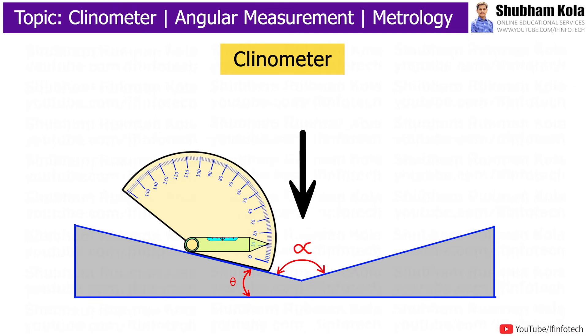Clinometer is mainly used to determine included angle of two adjacent faces of workpiece. To do this, the instrument base is placed on one surface of workpiece and rotary member is adjusted till zero reading of bubble is obtained.